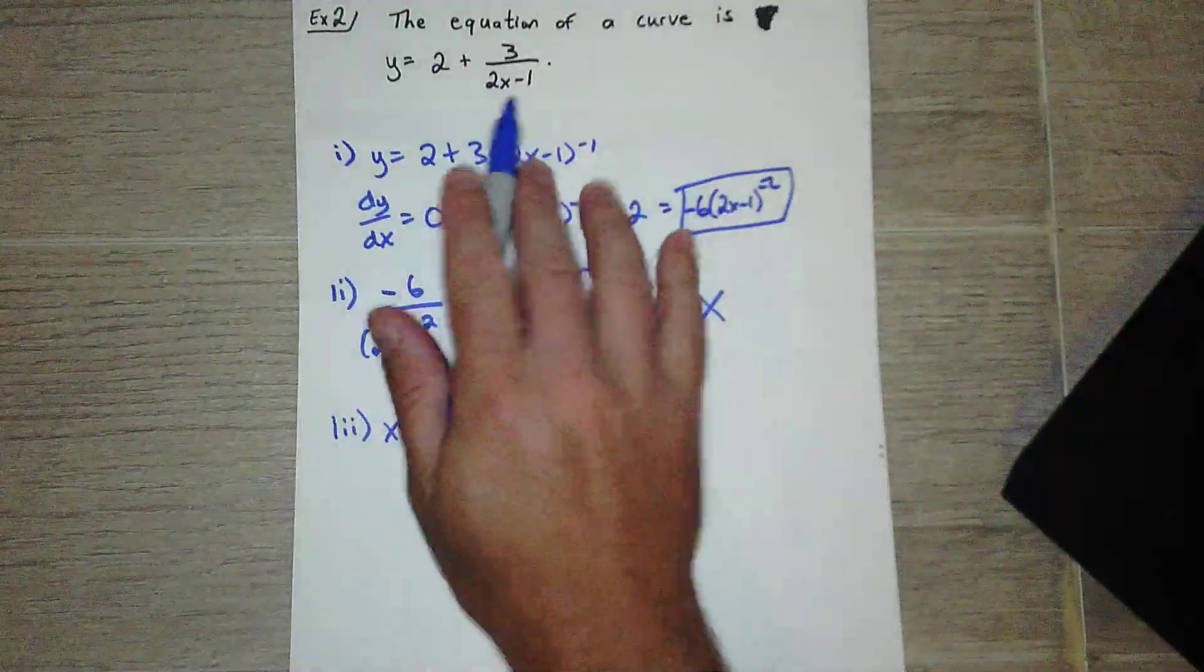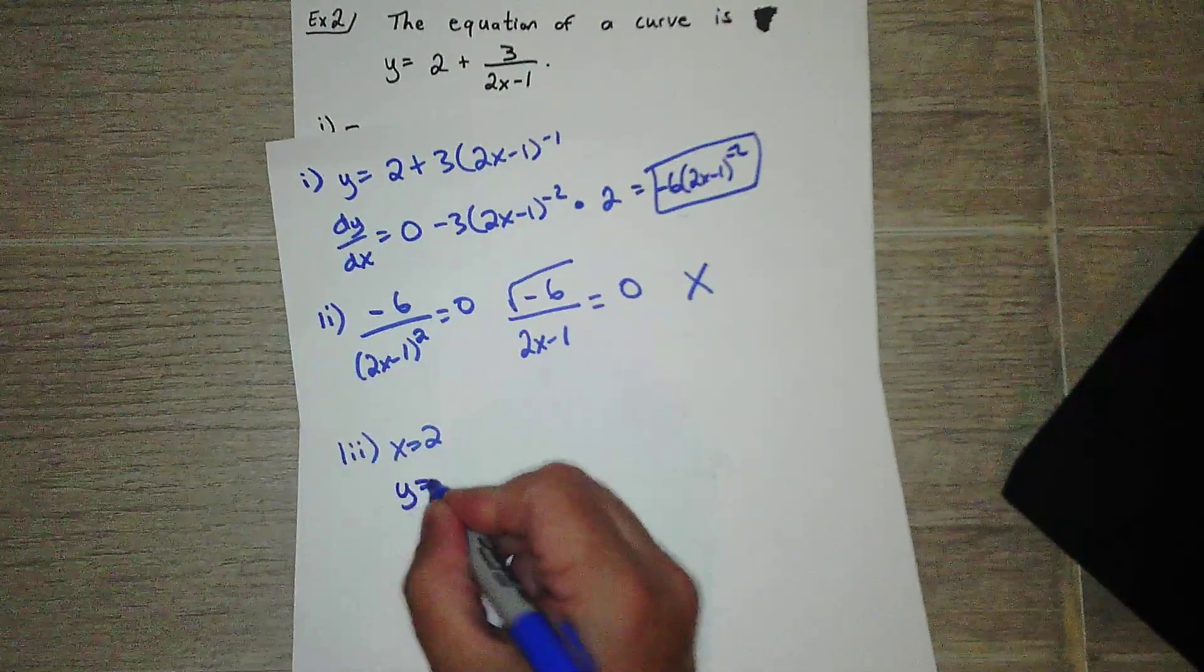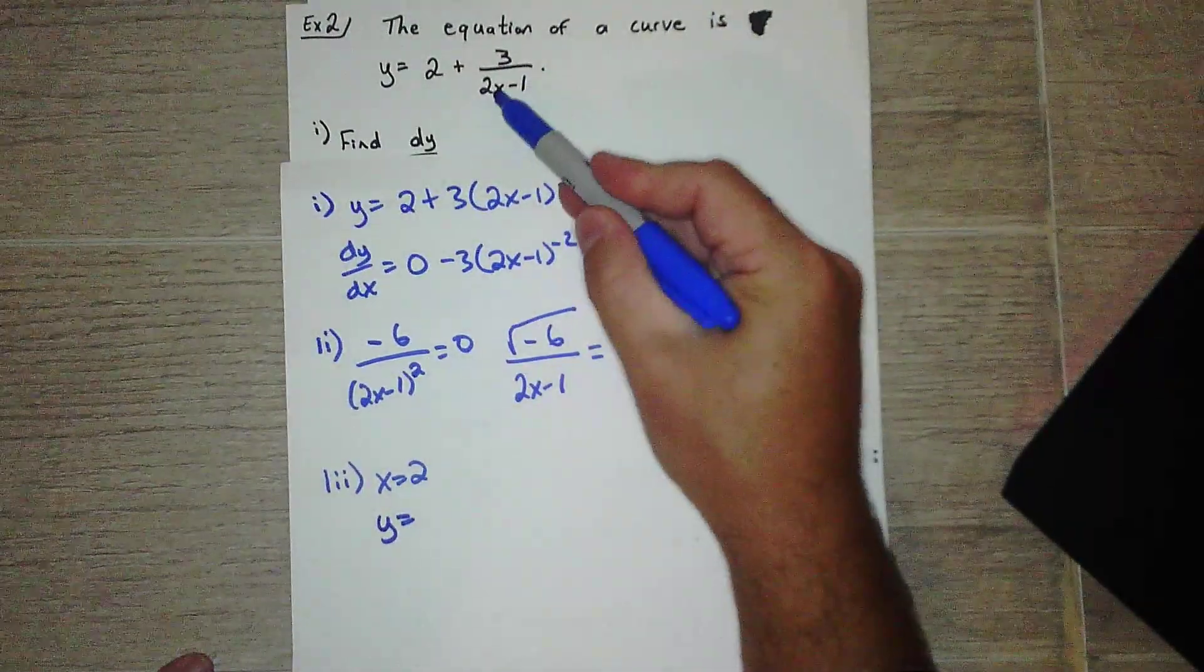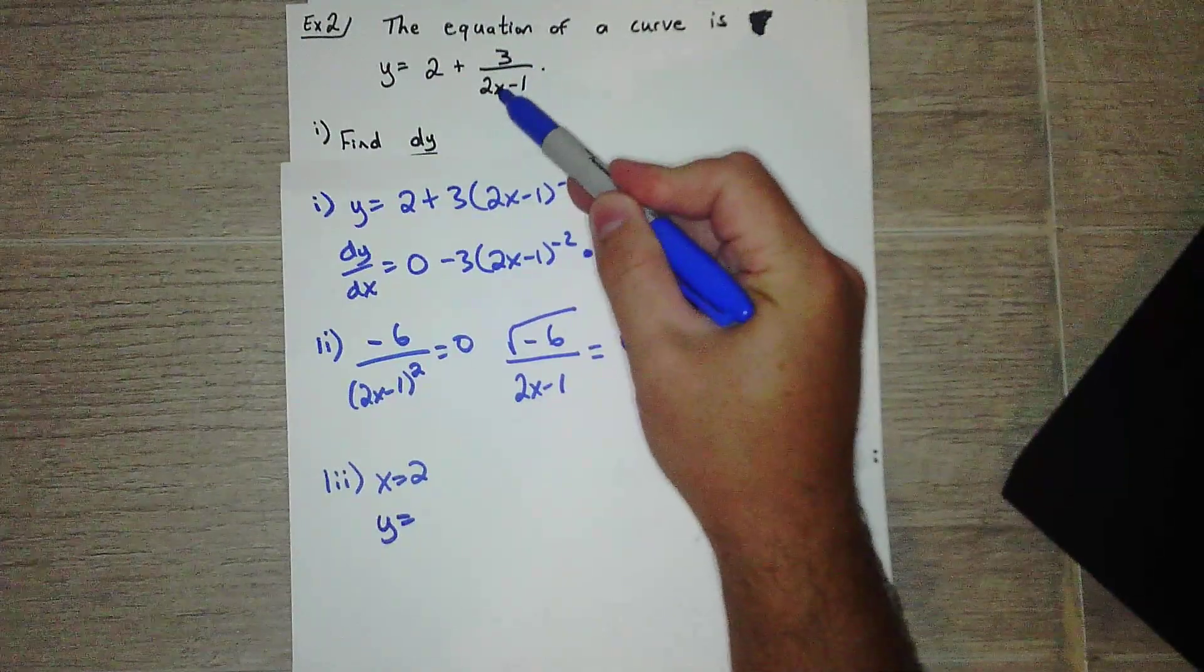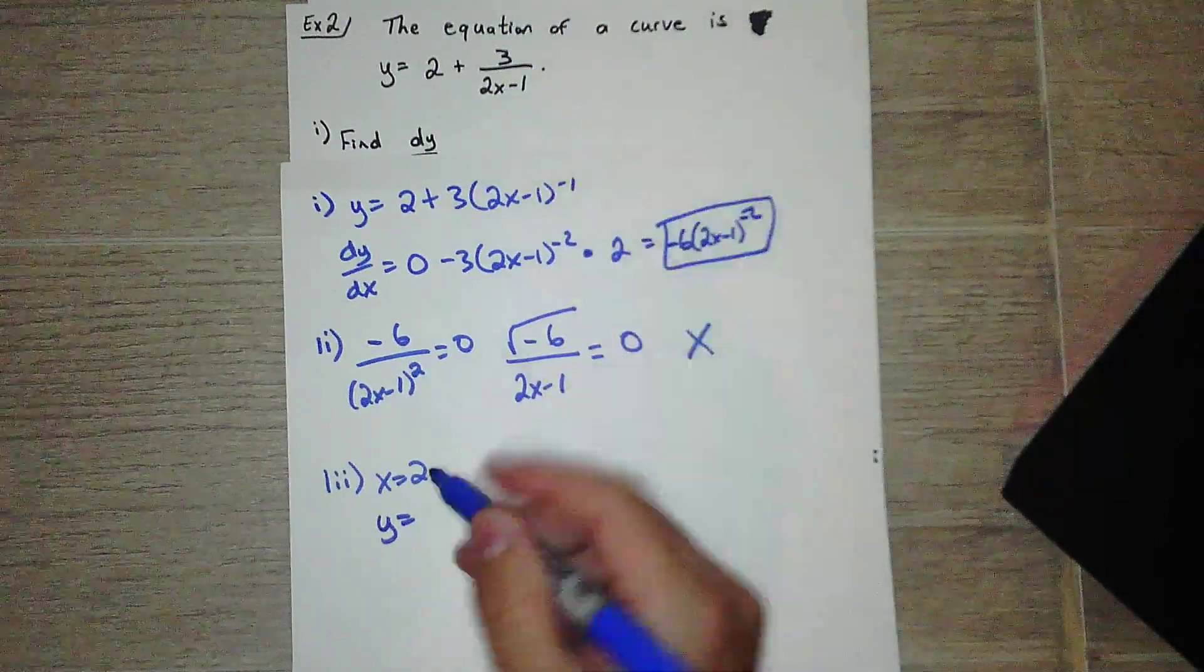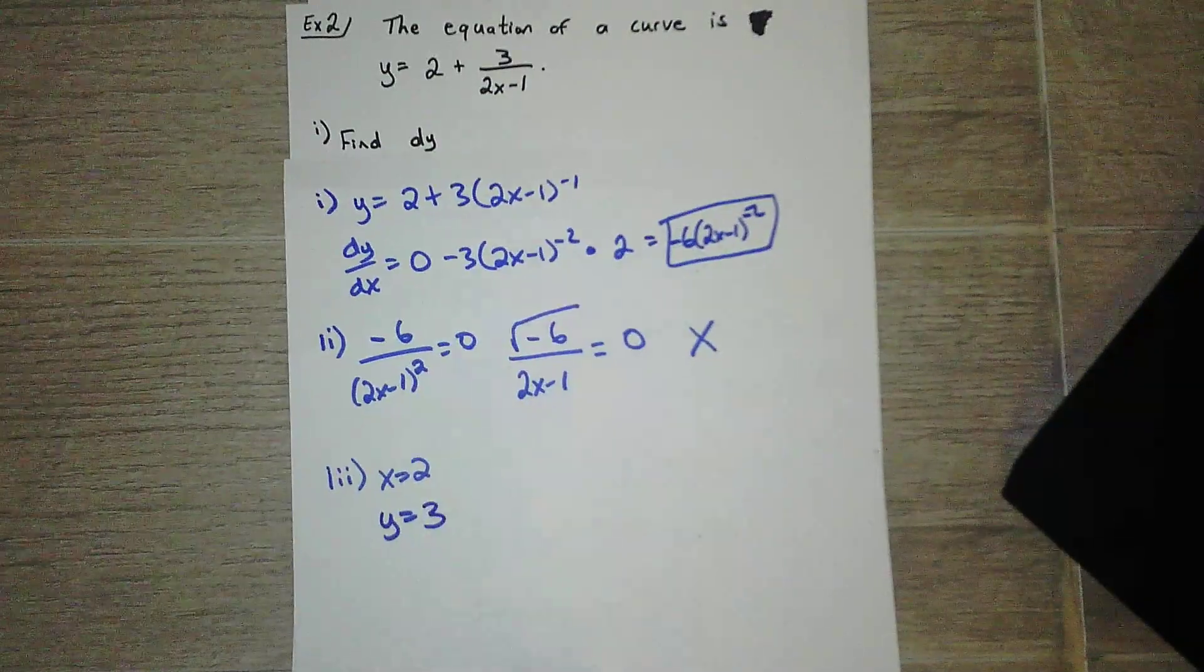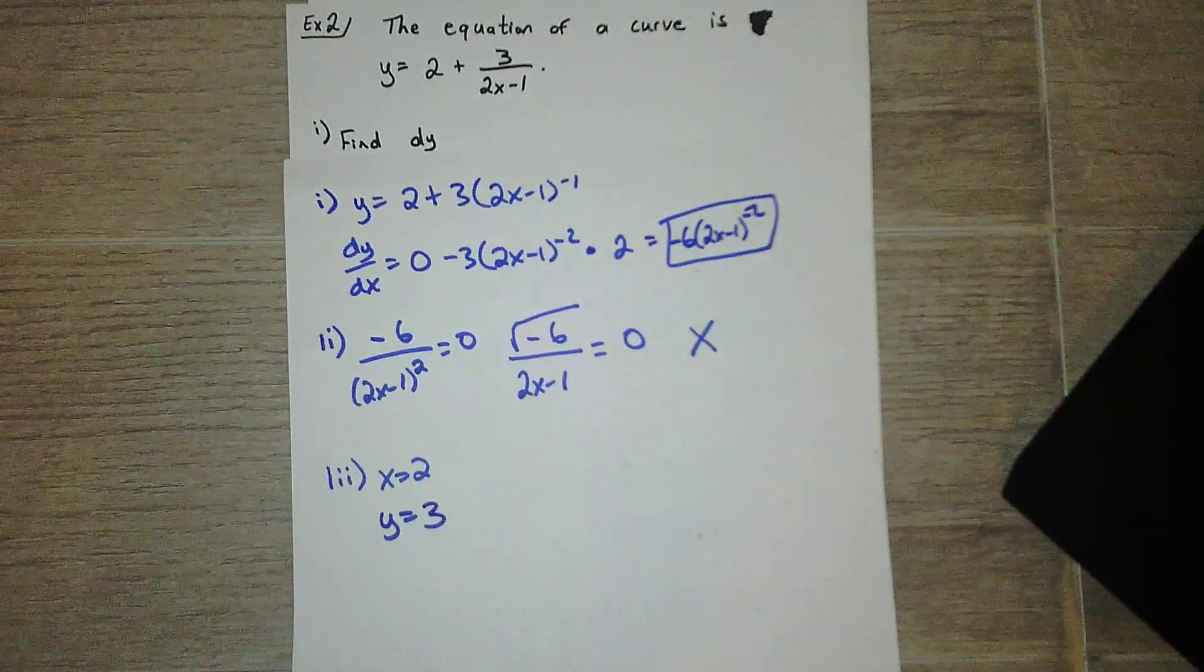Now, if we have x, how do we find y? We plug it back into here. So if x is equal to 2, y is equal to, we've got 4 minus 1, which is 3, and 3 over 3 is 1. So we've got 2 plus 1, which is 3. So that's our point.